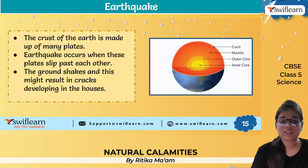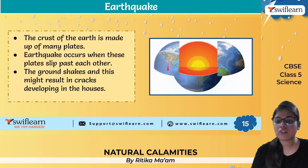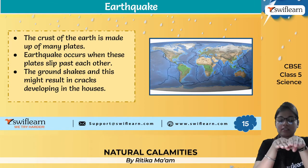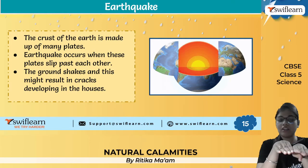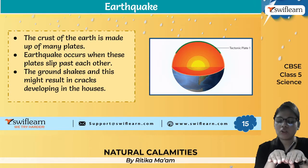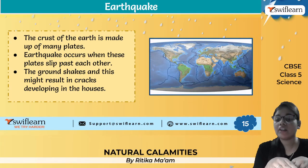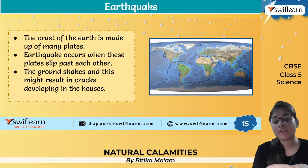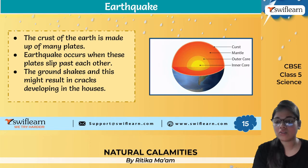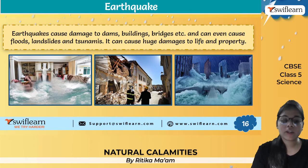Our earth is made up of many plates. The outer layer of the earth — the crust — is made up of many plates. When these plates slip against each other, earthquakes occur. The plates are continuously moving at a very low speed, but when they move upon each other, it results in an earthquake. During an earthquake the ground shakes and it can result in cracks in houses, leading to great destruction.